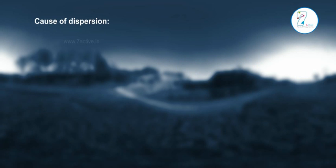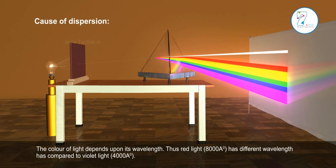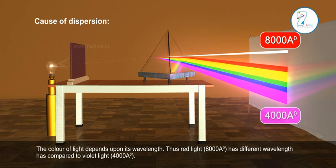Cause of dispersion: The color of light depends upon its wavelength. Thus, red light at 8,000 angstroms has different wavelength as compared to violet light at 4,000 angstroms.